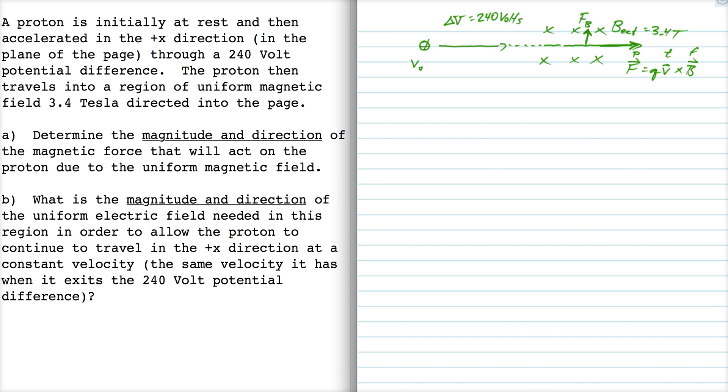There's the direction. Now the magnitude is going to be qvb sin 90 because we're told that the proton is moving in the plus x direction in the plane of the page and the magnetic field points into the page, so our angle between them is 90 degrees. We know q and we know b, we need to find v. We need to find out how fast this proton is going after it passes through the 240 volt potential.